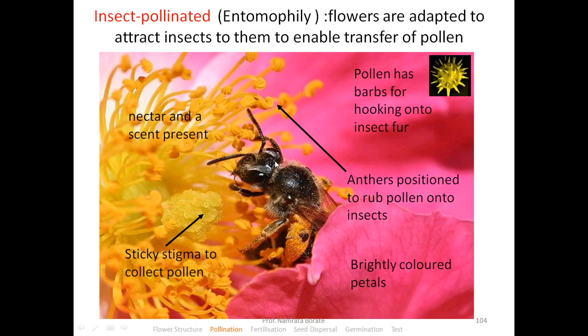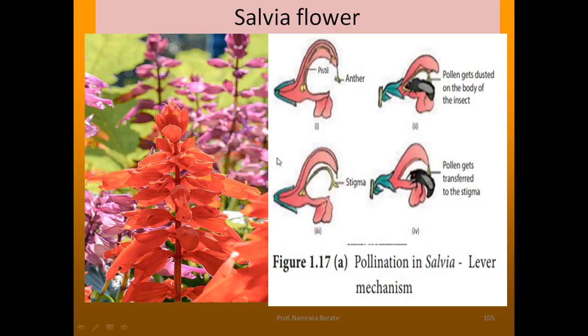In some plants there is a special adaptation for insect visitors to help in cross-pollination. An example is Salvia, which shows the lever mechanism or turn-pipe mechanism. This image indicates the Salvia flower. In this flower there is a bifurcated stamen — the lower stamen is a sterile one and the upper stamen is a fertile one. When insects come in contact with the flower, the pollen grains are dusted on the back side of the insect body.